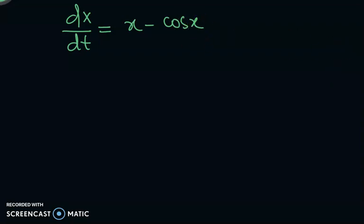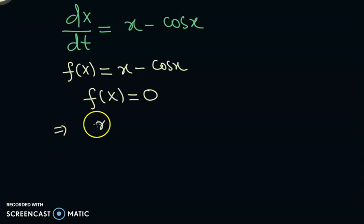So before we analyze, before we start, we need its equilibrium solution. Remember in this case f of x is x minus cos x, and we know that for equilibrium point we solve this f of x to be 0, which gives me x minus cos x to be 0, or which gives me x equal to cos x.